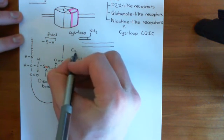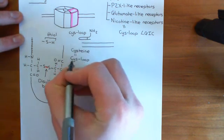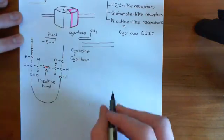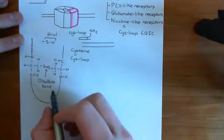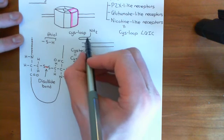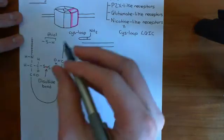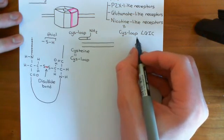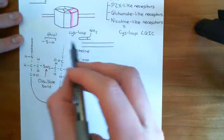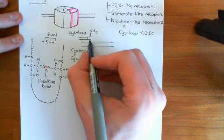'Cys' is short for cysteine — it's the three-letter amino acid abbreviation for cysteine. So this is a loop in the polypeptide structure that is held together by a disulfide bond between two cysteine residues on the two parallel strands. All cys-loop ligand-gated ion channel subunits of the pentamer will have one of these in their extracellular domain.